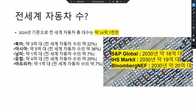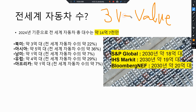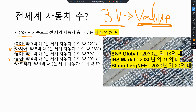그러면 중요한 건 3V를 통해 만들어진 Value를 우리가 얼마나 출력할 수 있느냐 — 이건 인풋 요소의 ROI 관점에서 보는 거고요. 저는 주식 전문가라기보다는 빅데이터 분석 전문가로서 추정치와 가정을 두고 계산을 해본 거니까 참고로 보시면 재미있을 것 같습니다. 2024년 기준 세계 자동차 총 대수는 14억 7천만 대입니다. 북미, 아시아, 남미, 유럽 쪽 자동차인데요, S&P 글로벌에서 예측하는 것은 2030년에 약 18억 대, IHS에서는 19억 대, 블룸버그에서는 20억 대가 2030년도에 돌아다니는 차의 수라고 파악할 수 있습니다.